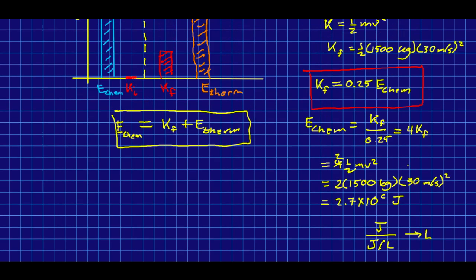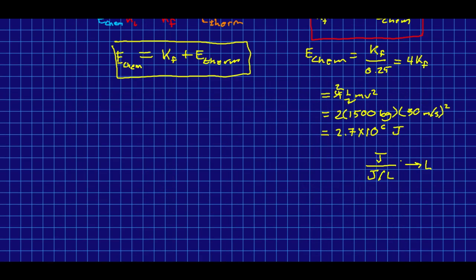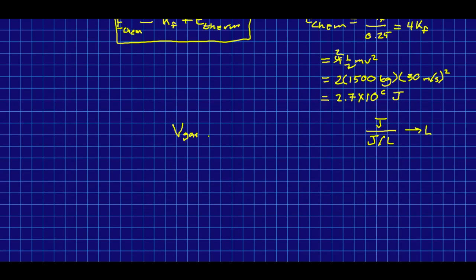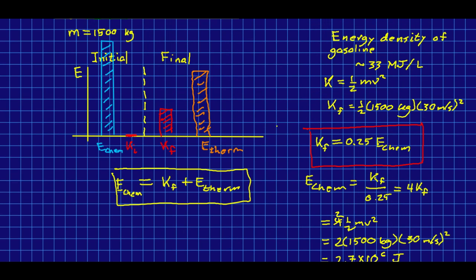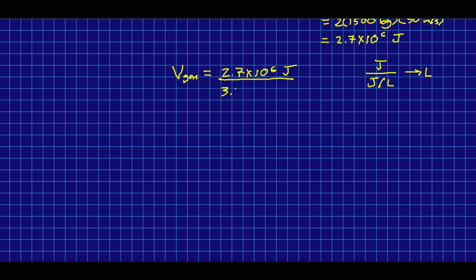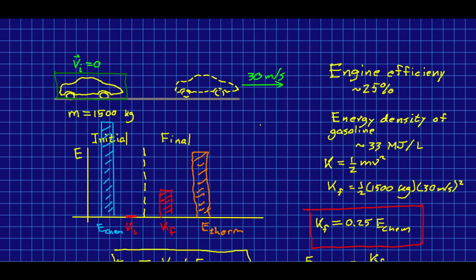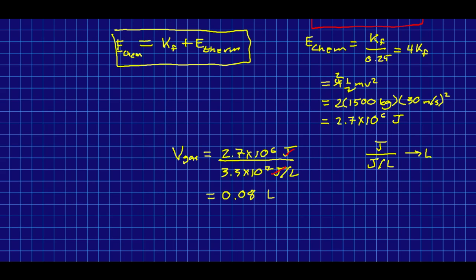So there we go. Our volume of gasoline burned just speeding up from rest to highway speed—it's not going to be a lot of gas, but we have 2.7 times 10 to the 6 joules over 33 megajoules per liter, so that's 3.3 times 10 to the 7 joules per liter. Joules will be gone and we'll be left with liters, and that is about 0.08 liters. So almost a tenth of a liter just getting going and up to highway speed, which tells you why stopping and starting repeatedly in city traffic burns so much gas.